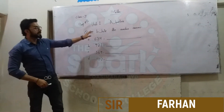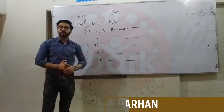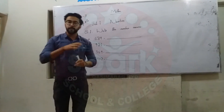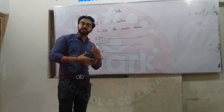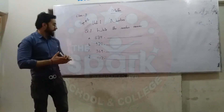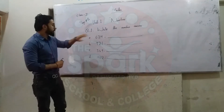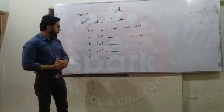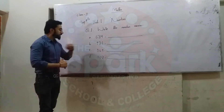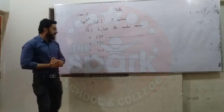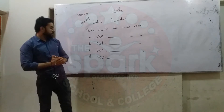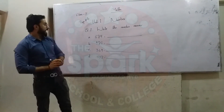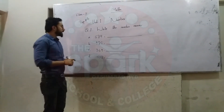First question: write the number names. The numbers are 684, 951, 369, and the last one is 402. So first of all, we write number 1.